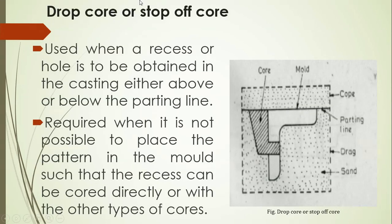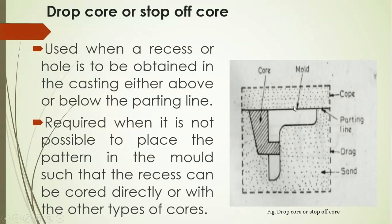The next type is the drop off or stop off core. Up until now, almost all the cavities we have discussed are related to the parting line — the horizontal core cavity is made along the parting line, the vertical core cavity is near the parting line. But here, the cavity to the casting is made below or above the parting line, and for this we use a drop off or stop off core. It is used when a recess or hole is to be obtained in the casting either above or below the parting line. It is required when it is not possible to place any other type of core to achieve the needed recess.